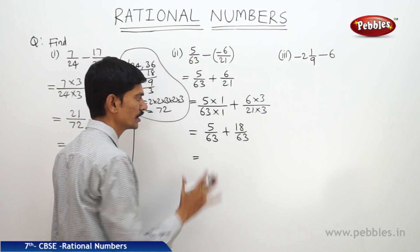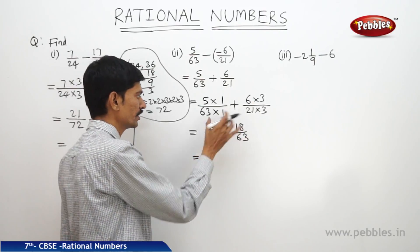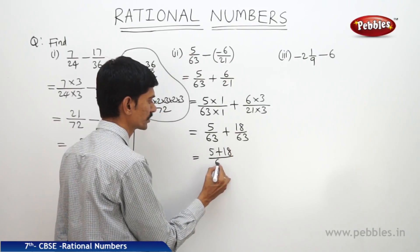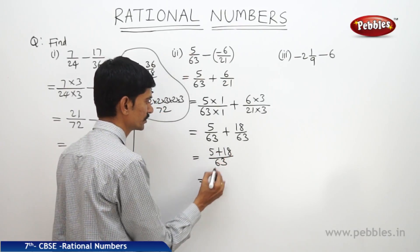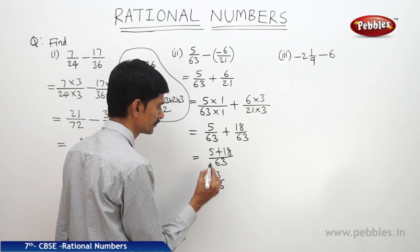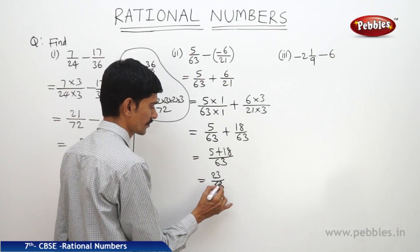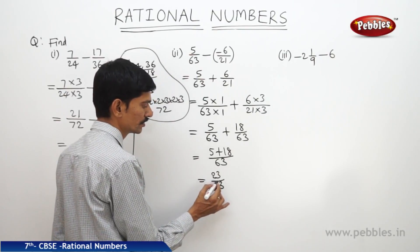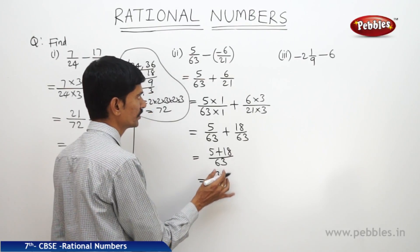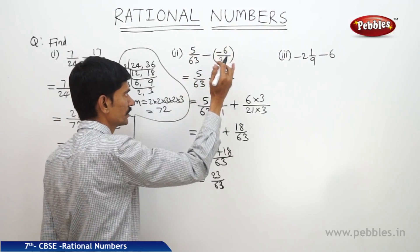Now the denominators are equal, so we can simplify the numerators: 5 plus 18 by keeping the same denominator 63. So 5 plus 18 is 23 by 63. We cannot cancel 23 and 63 in any table, so this is the result of the two rational numbers 5 by 63 and minus 6 by 21.